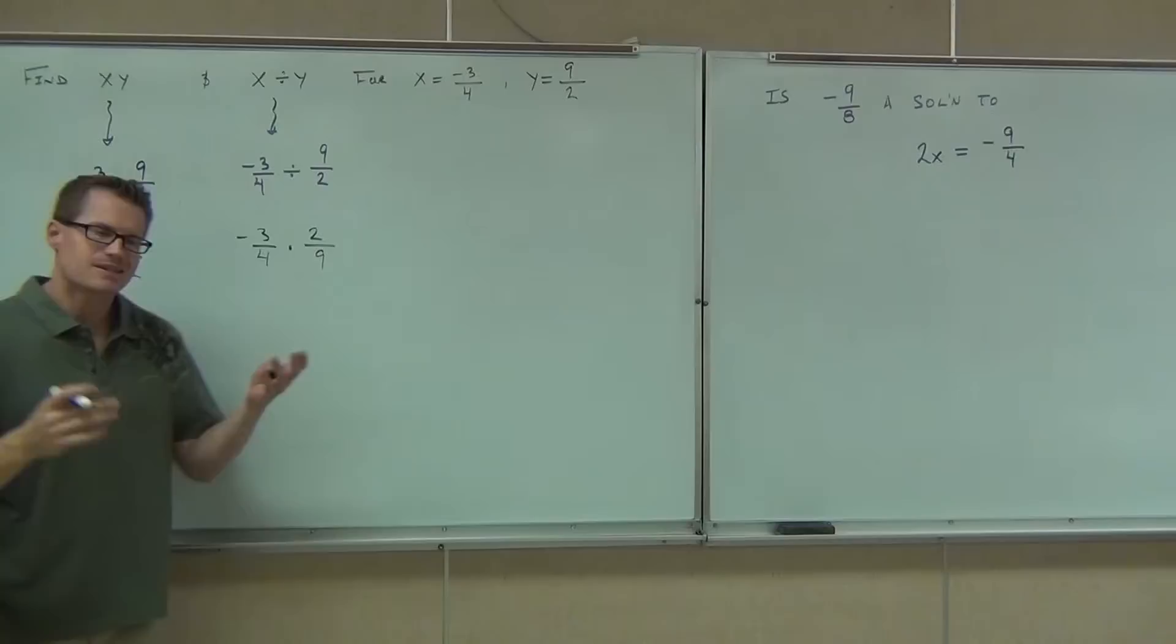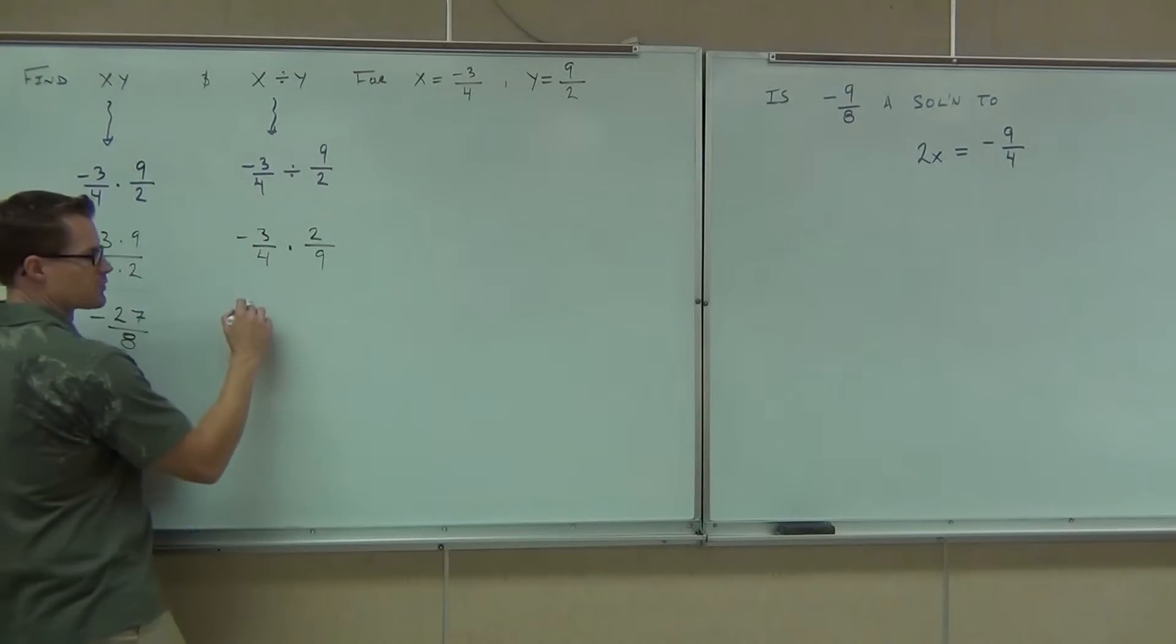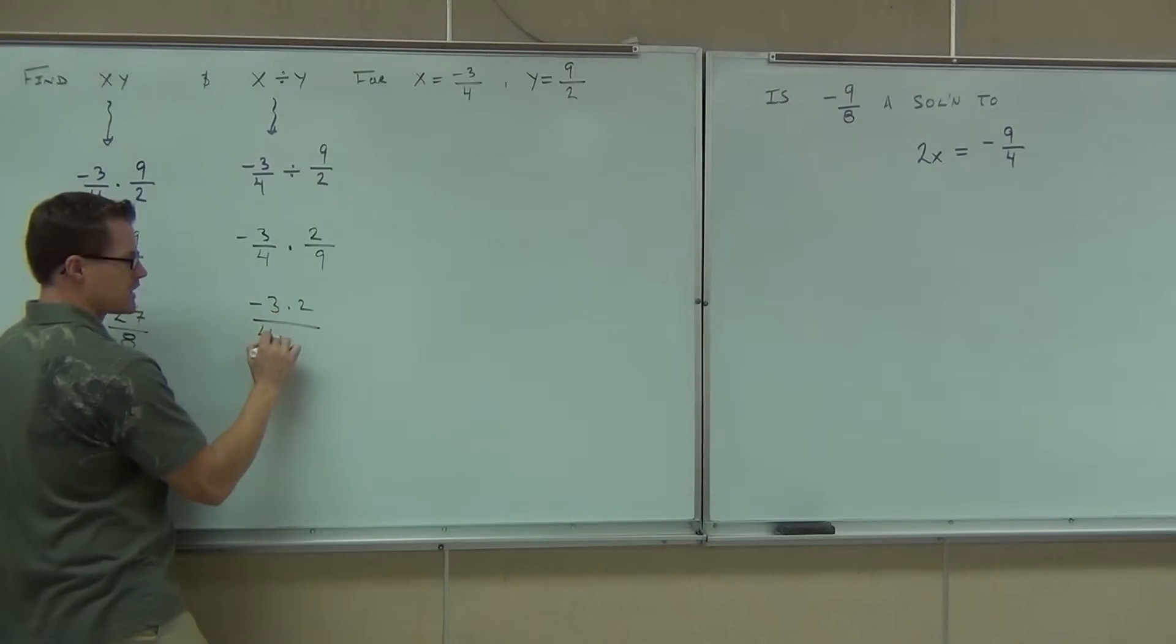Again, we'll have to write this as one fraction because this changes a division problem into a multiplication problem and we start all over again. Negative 3 times 2 over 4 times 9.